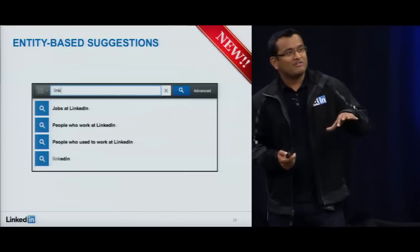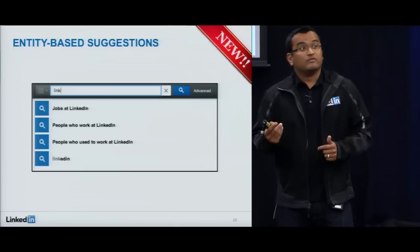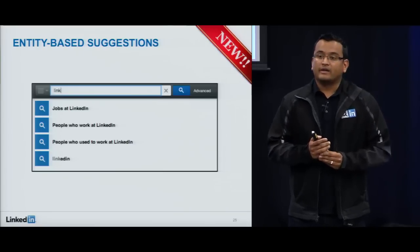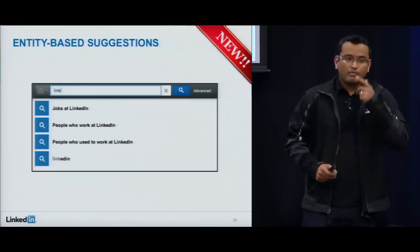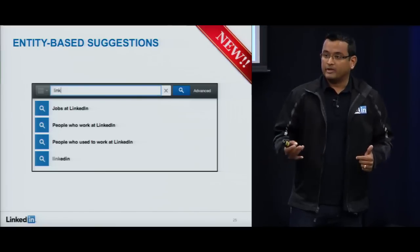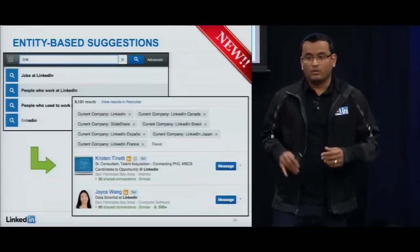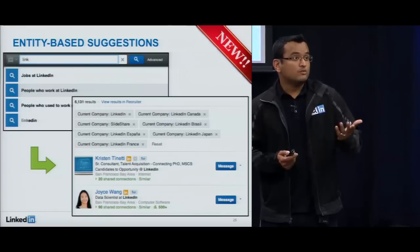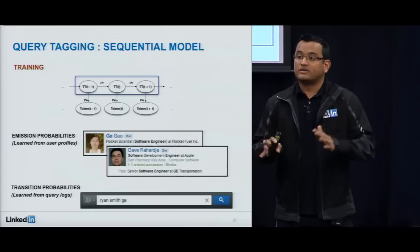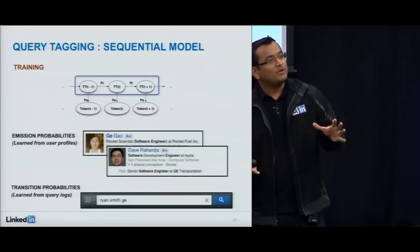We are also using query tagging to do more intelligent query suggestions as you type — this may still be in beta. For example, if you start typing 'link,' we know it's likely to complete to 'LinkedIn,' and since LinkedIn is a company, we can give more intelligent suggestions like 'look for jobs at LinkedIn' or 'look for people who work there.' When you select one of these suggestions, we convert it to a structured faceted query so it matches the right content and nothing else.